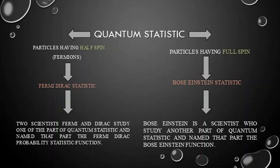The distribution used for fermions is Fermi-Dirac statistics, named after two scientists — Fermi and Dirac. For particles having full spin, the quantum statistics used is named Bose-Einstein, after scientists Bose and Einstein, who developed the quantum mechanical treatment of full-spin particles.